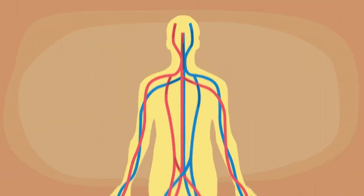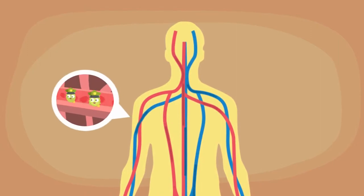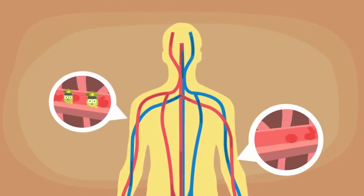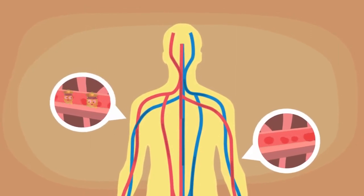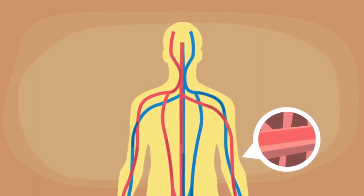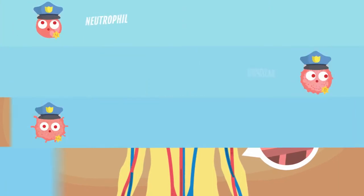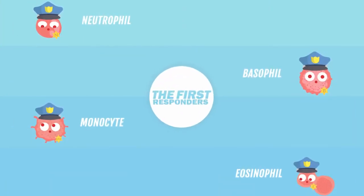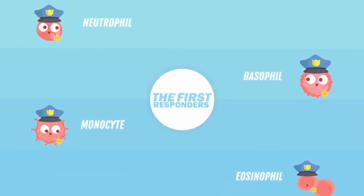There are two types of circulating cells: cells that sample antigens all over the body and cells that act as first responders. First responders are mostly innate immune cells like neutrophils, basophils, monocytes, and eosinophils.